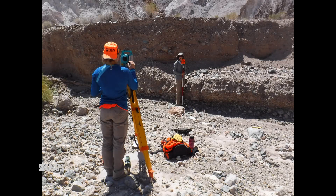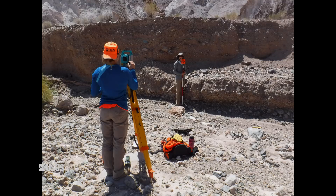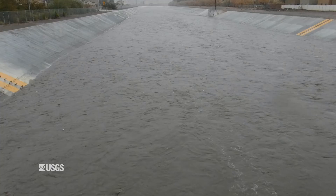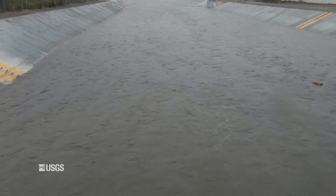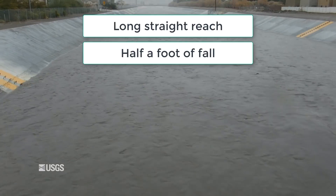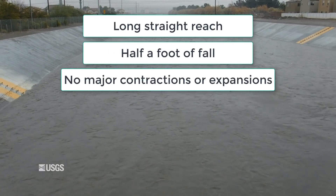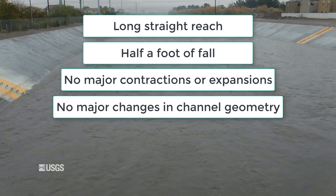The most common indirect measurement method employed by the USGS is slope area. Generally, if you've heard people in your office talk about running indirects, they are most likely referring to slope area measurements. Here is what you need for a slope area measurement: a long straight reach with at least half a foot of fall, no major contractions or expansions, and no major changes in channel geometry and slope.